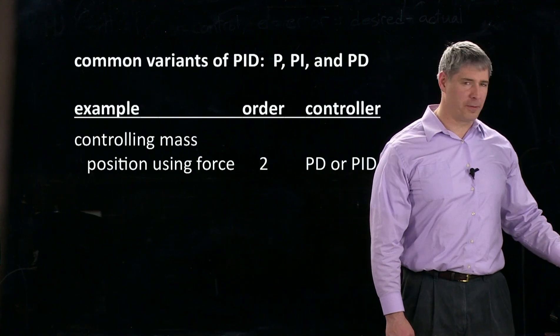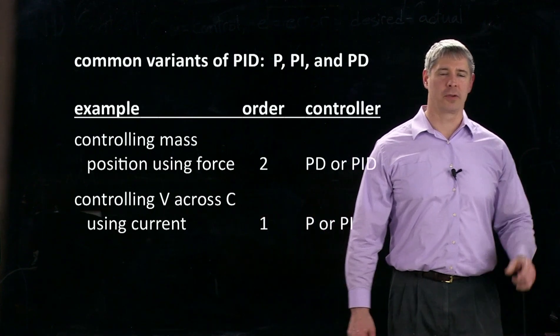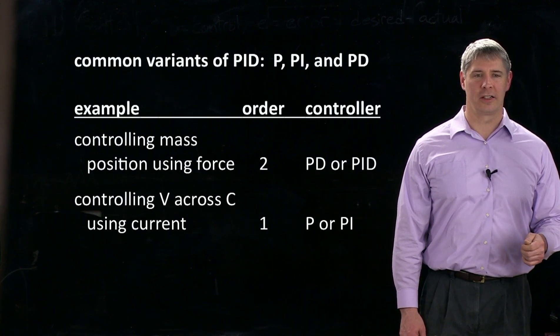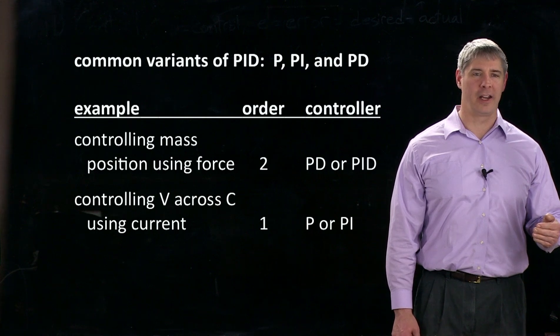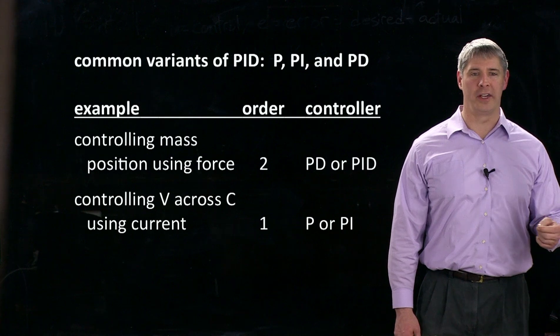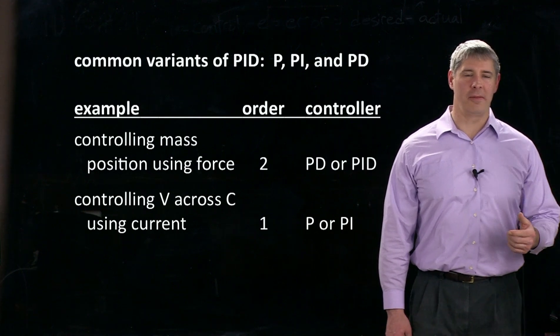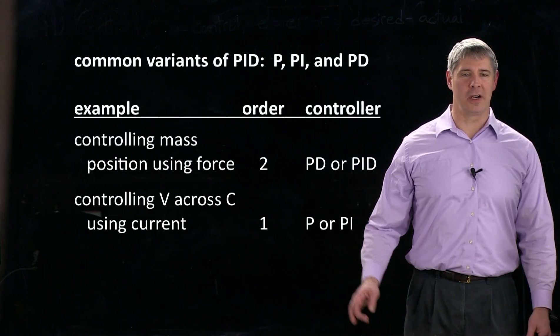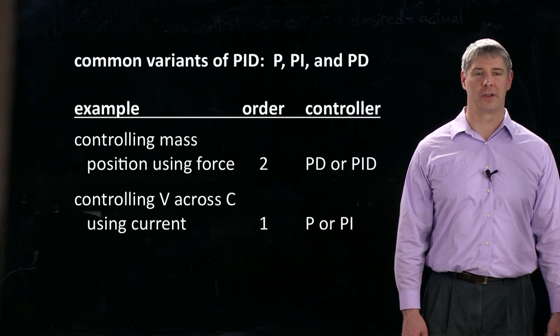On the other hand, if you consider a first order system such as this one, if I want to control the voltage across the capacitor using a current, we know that the voltage buildup across the capacitor is defined by first order dynamics. The voltage is only one integration away from the current. For that kind of system, there's not much danger of overshoot and oscillation. So there you might just prefer to use a proportional controller or more typically a proportional integral controller.